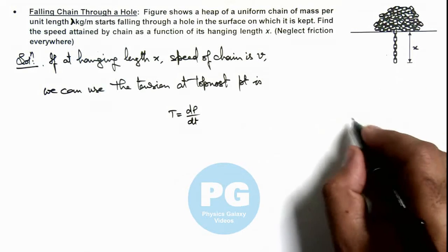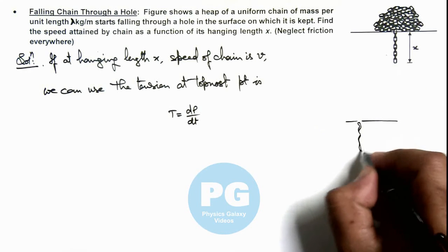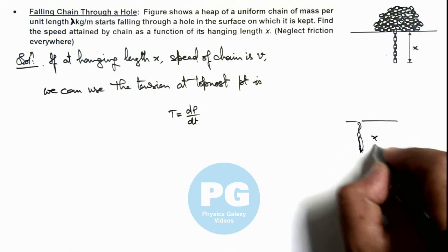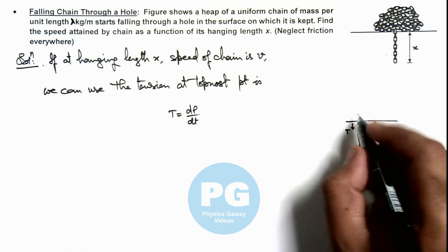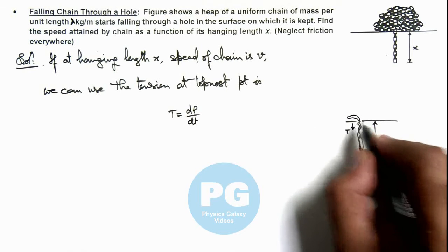If this is the hole and this is the chain hanging by length x, then tension T is acting on the chain at the top in the heap.